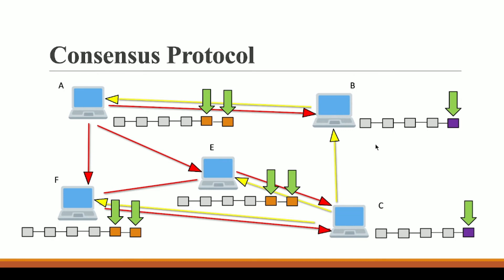Now you can clearly see that A, E, and F have the longest chain — six blocks — while B and C have only five blocks. According to our consensus protocol, we will only consider the longest blockchain and discard the blocks of the shorter chain. Since AEF has the longest blockchain, B and C's purple blocks will be discarded. The transactions that were in those purple blocks will be transferred back to the mempool so that mining can be done on them again.